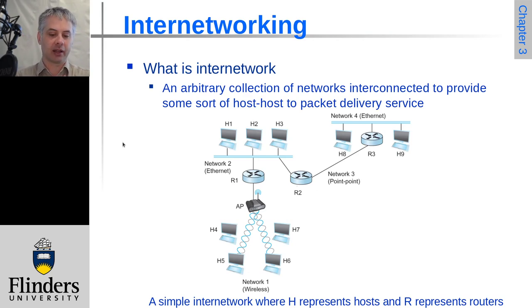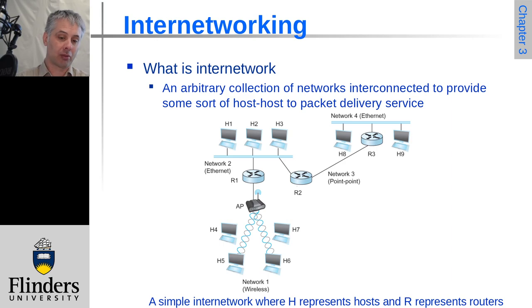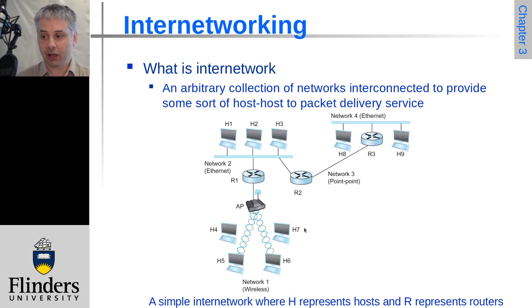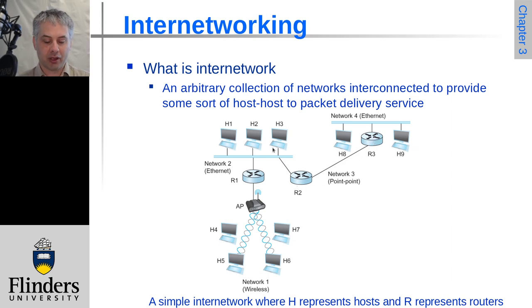Internetworking, unlike bridging, does not require networks to be homogeneous. It allows connecting different types of networks — different speeds, wired, wireless, wide-area — and making a coherent network where all hosts can communicate. For example, we might have hosts on one Ethernet network, another Ethernet network, routers connecting them, and a router connecting to a wireless access point with more hosts. We want host 5 to communicate with host 9 just as easily as host 1 communicates with host 2.